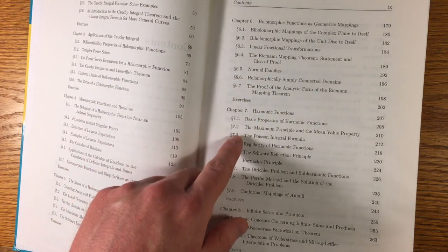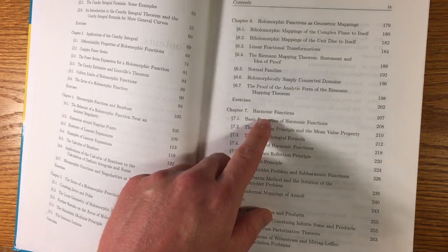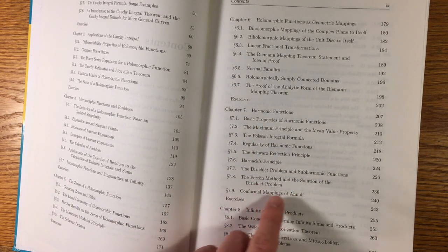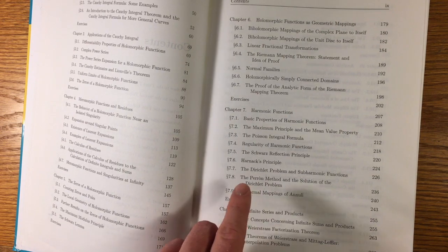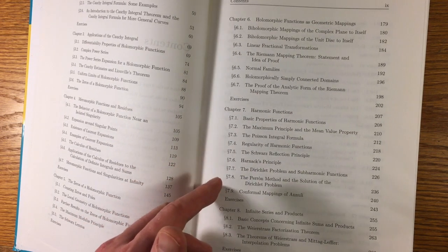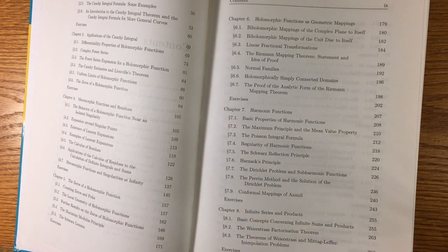And in order to prove that, it follows up with a chapter on harmonic functions, culminating with the Perron method and solution of the Dirichlet problem, a great theorem often missing in a PDE class. But it's here. This is where people should get it.